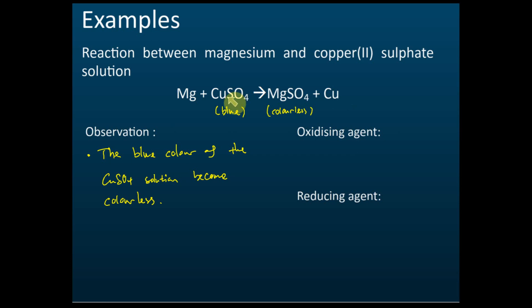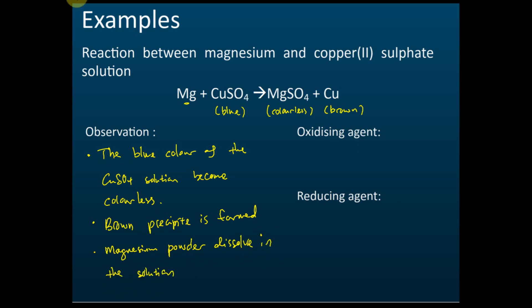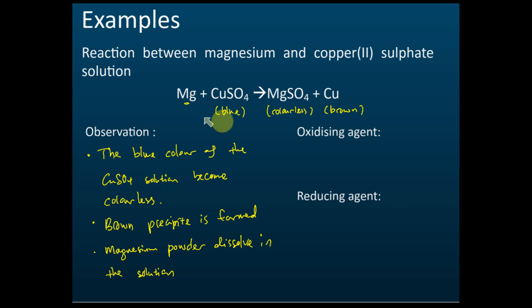We predict observations from the chemical equations by checking any color changes. What about the copper metal produced? It is brown, so we observe that a brown solid or precipitate is formed. And for magnesium — since it goes from a solid metal to becoming part of a solution, we can say the magnesium powder dissolves in the solution. These are the possible observations.